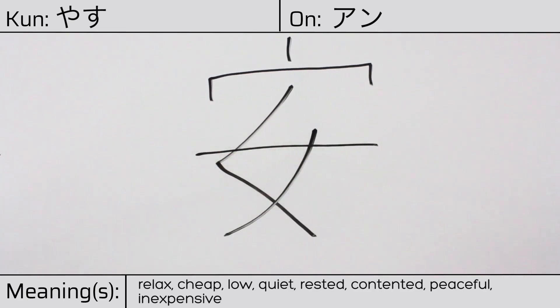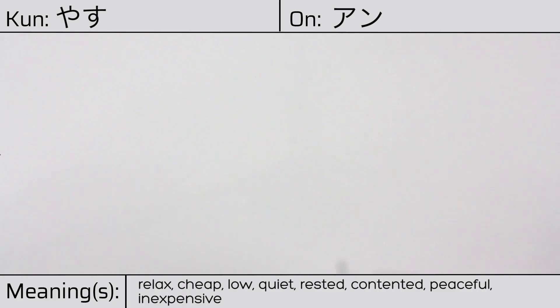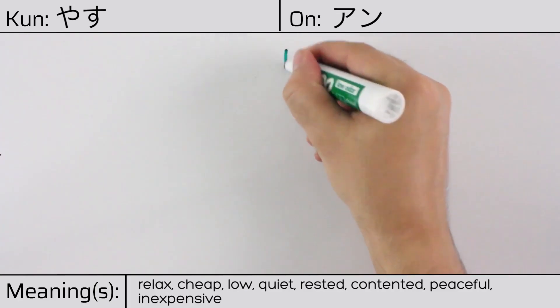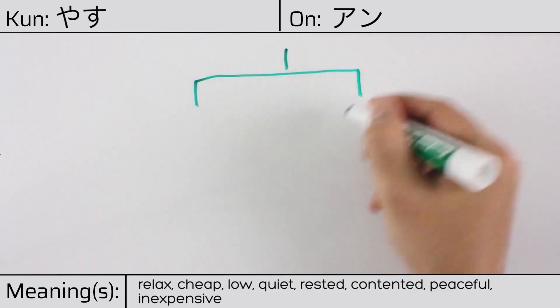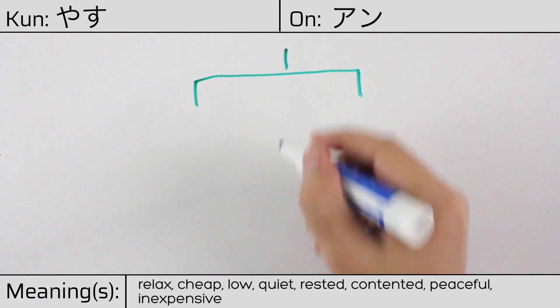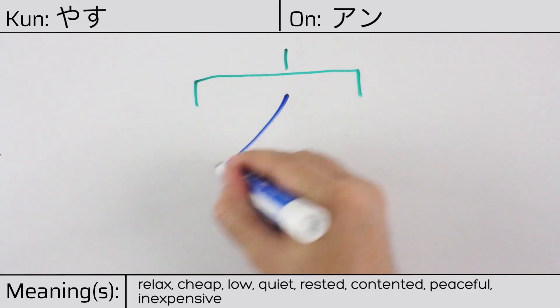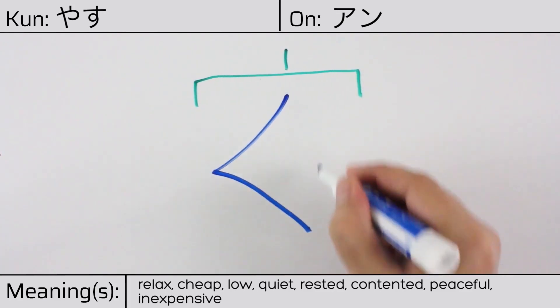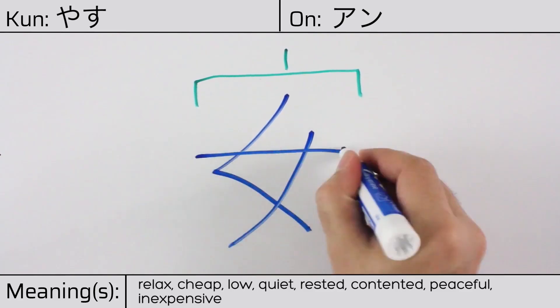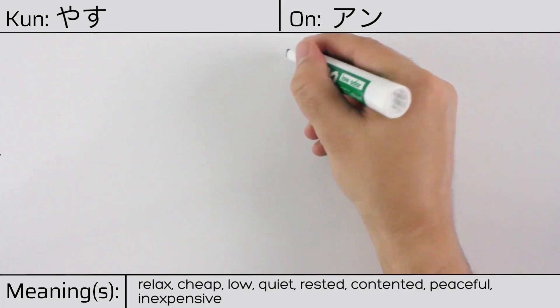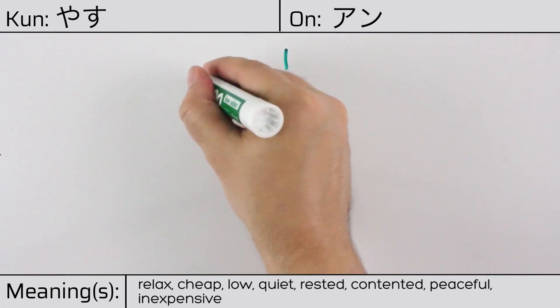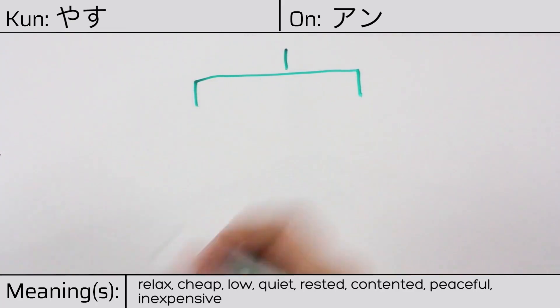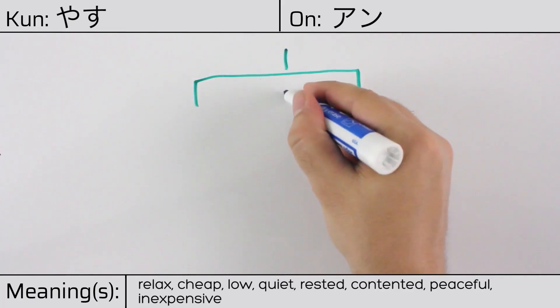This character is made up of the following radicals or parts: the roof or house radical, ukanmuri, and the kanji meaning woman or female. You can remember this kanji by the following hint: a woman relaxing at home.